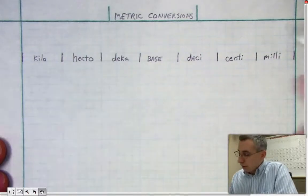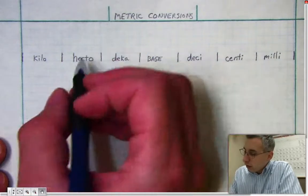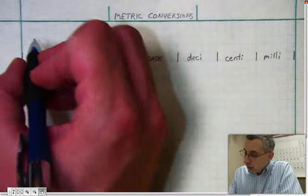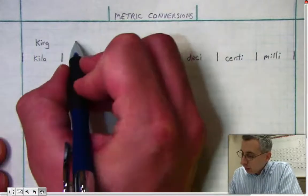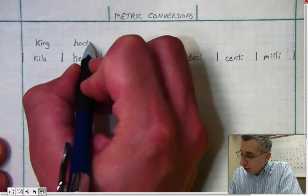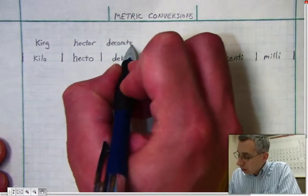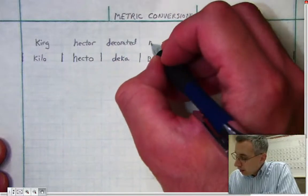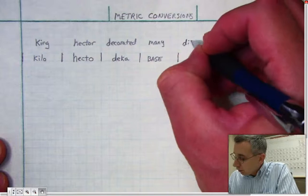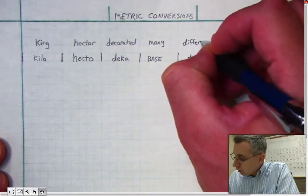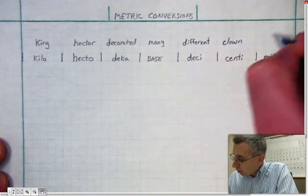Now, if you need to have some help memorizing these, one saying Mrs. Pepin came up with, perhaps you might remember it from biology class: King, Hector, Decorated, Many, Many, Different, Clown, Masks.